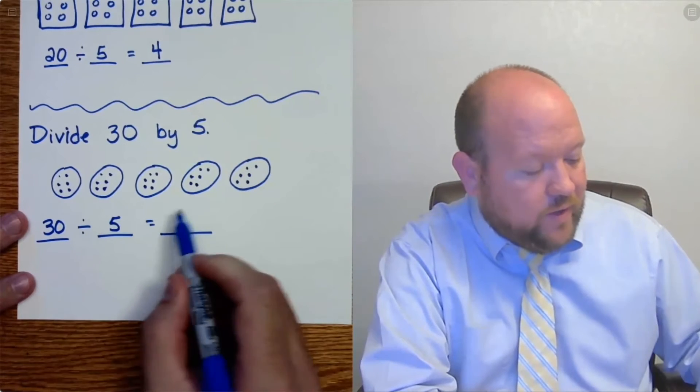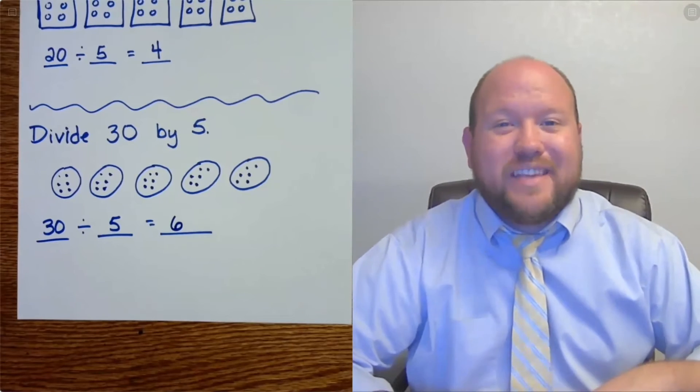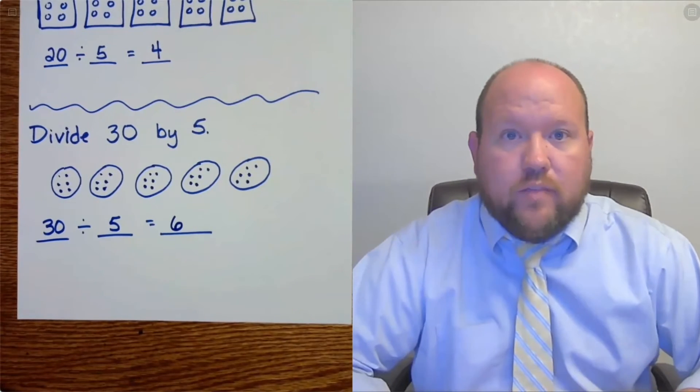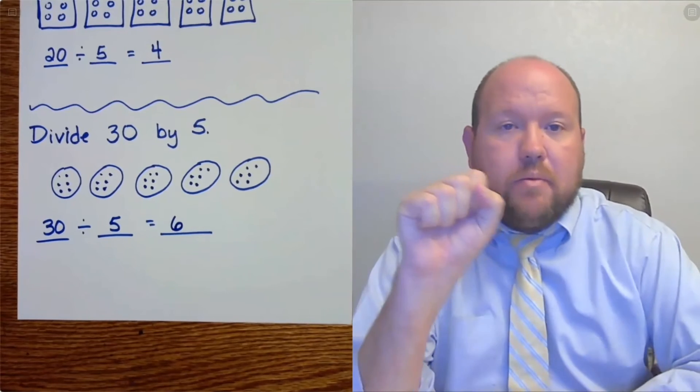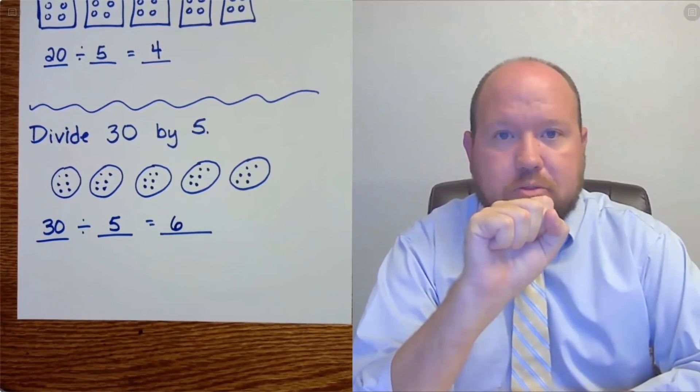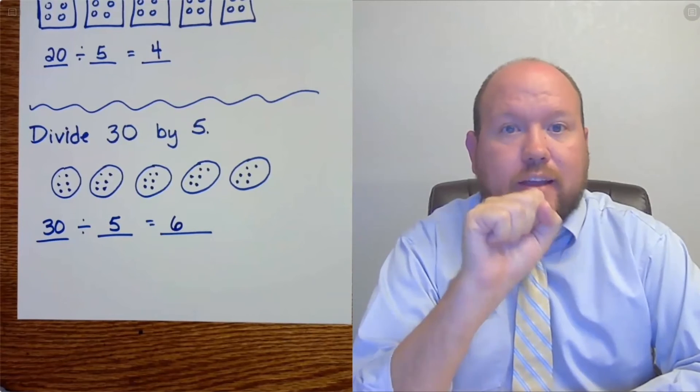So 30 divided by 5 equals 6. Now you can also use skip counting to help, right? And so most of us are pretty proficient with skip counting by 5. And so what I'm going to do is I'm going to use my fingers to help keep track. I'm going to put one finger up every time I count by 5 until I get to 30.